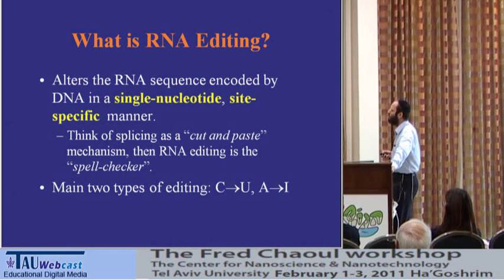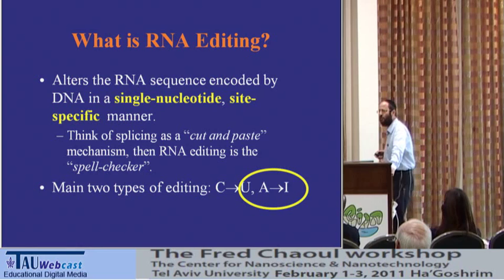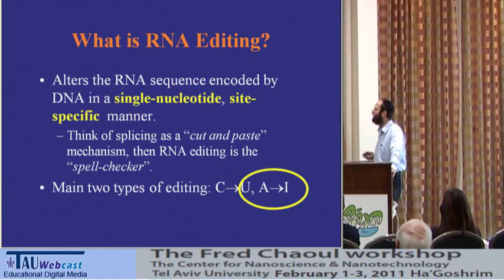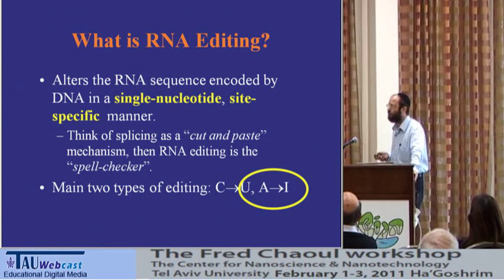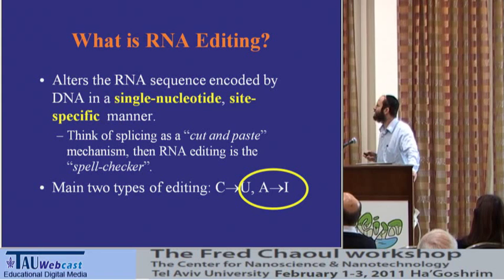I will speak about A-to-I. RNA is composed usually of four letters: A, G, C, and U. But here RNA editing changes the adenosine, the A, into a fifth nucleotide, which is the inosine. For all practical purposes, this inosine, as far as we know, behaves as a G, as a guanosine.